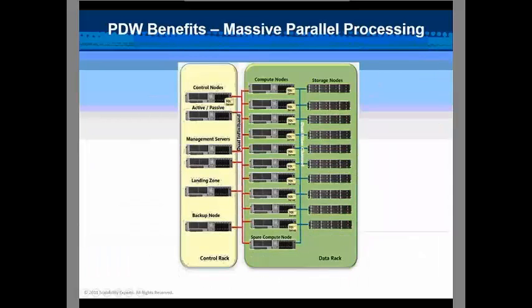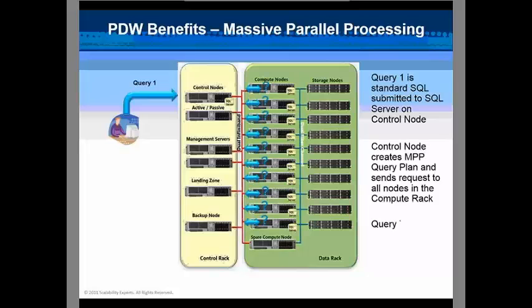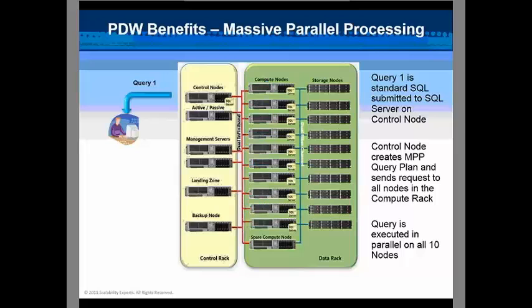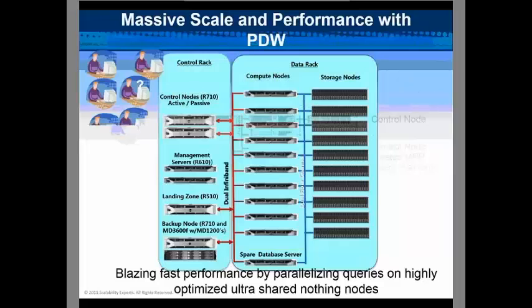A query comes in from the end user and goes to the control node. The control node passes that query off to the compute nodes, and every one of those compute nodes starts working at the same time. They then turn around and pass the query results back.